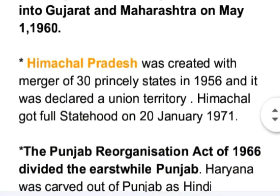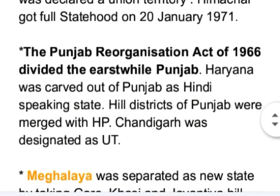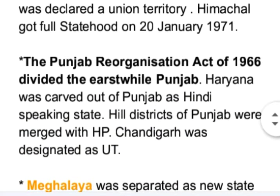Himachal Pradesh was created with the merger of 30 princely states in 1956 and declared a Union Territory, gaining full statehood on 20th January 1971. The Punjab Reorganization Act of 1966 divided the erstwhile Punjab: Haryana was carved out as a Hindi-speaking state, hill districts of Punjab were merged with Himachal Pradesh, and Chandigarh was designated as a Union Territory.